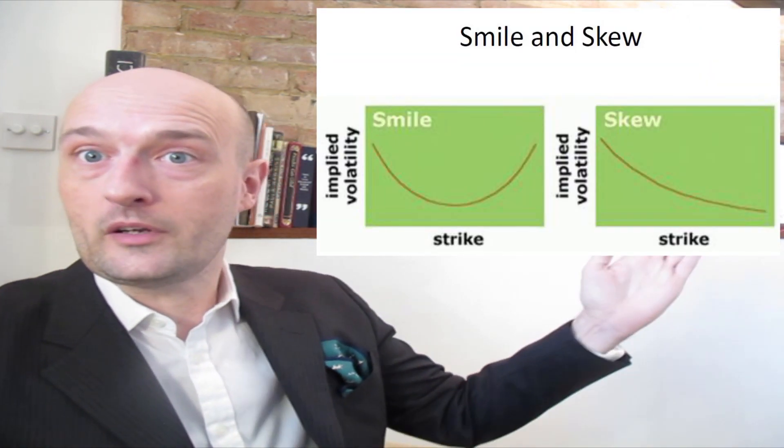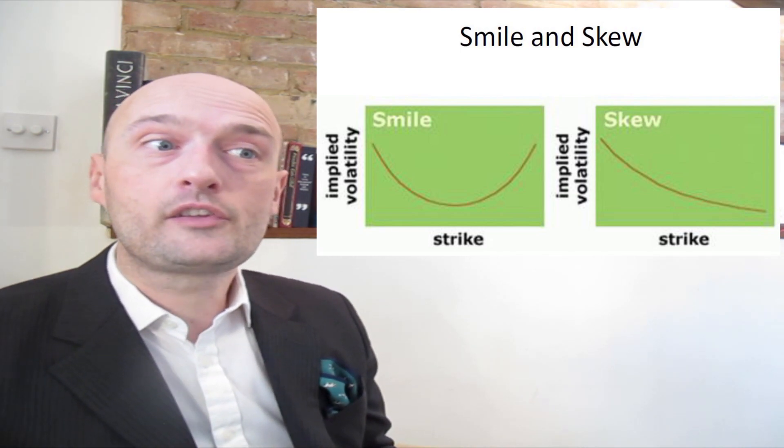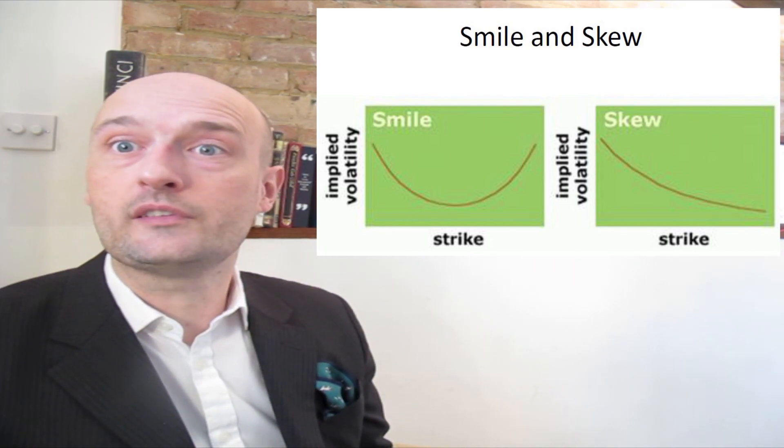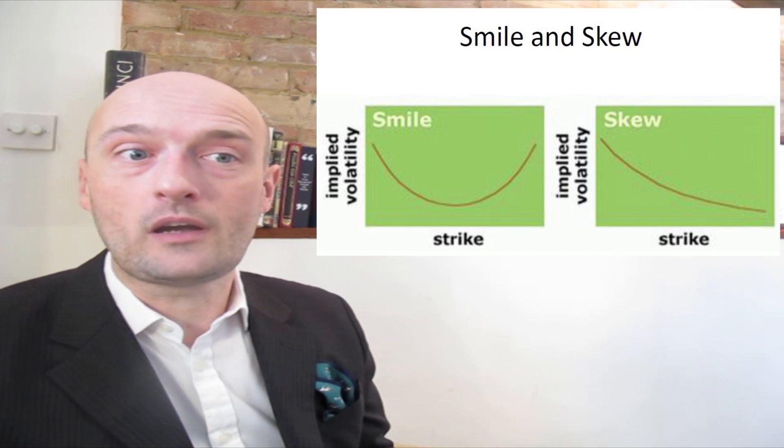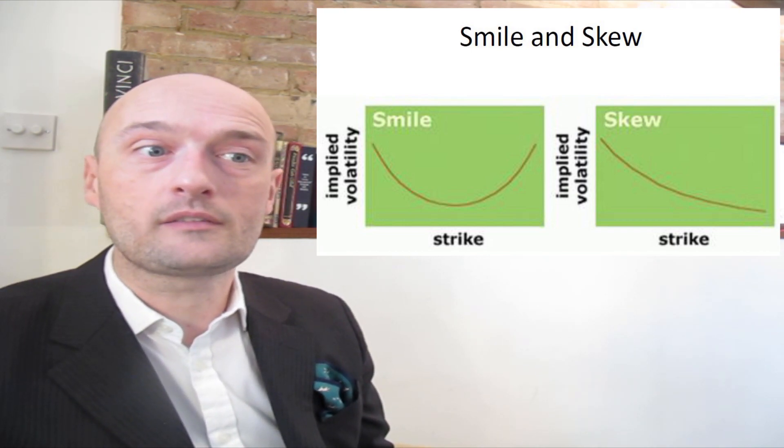Skew is sort of the shape of a smile but more off to one side. Skew is essentially when options traders are charging more for low strikes — in-the-money calls — and maybe more but not as much for high strikes — out-of-the-money calls — and that pushes through to puts because of put-call parity. In equities we usually have a skew, whereas in currencies we often see a balanced smile on both sides. With currency options, a put can very much be a call and a call can be a put.